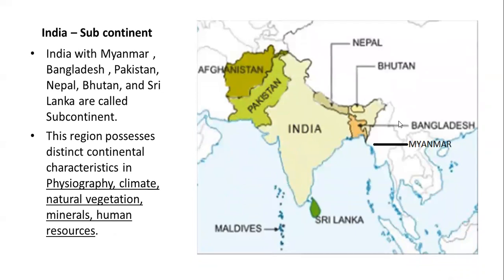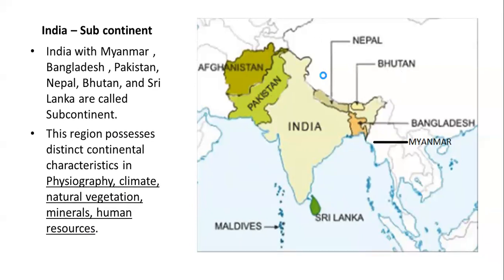Why is India called a subcontinent? Because — as you can see from the underlined words — physiography, climate, natural vegetation, minerals, and human resources all have distinct characteristics. India and its neighboring countries share more or less the same characteristics across these features. So India is called a subcontinent together with all the neighboring countries.